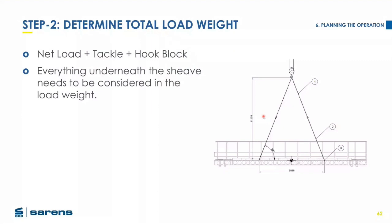Determining the total load weight: take the net load — the weight of the item being lifted, say 15 tonnes — then define the tackle weight or make an engineering judgment on it, then add the hook block weight. The hook block is not considered in the crane's capacities as it's considered part of the load. So in simple terms: weight of load + weight of tackle + weight of hook block = lift weight.